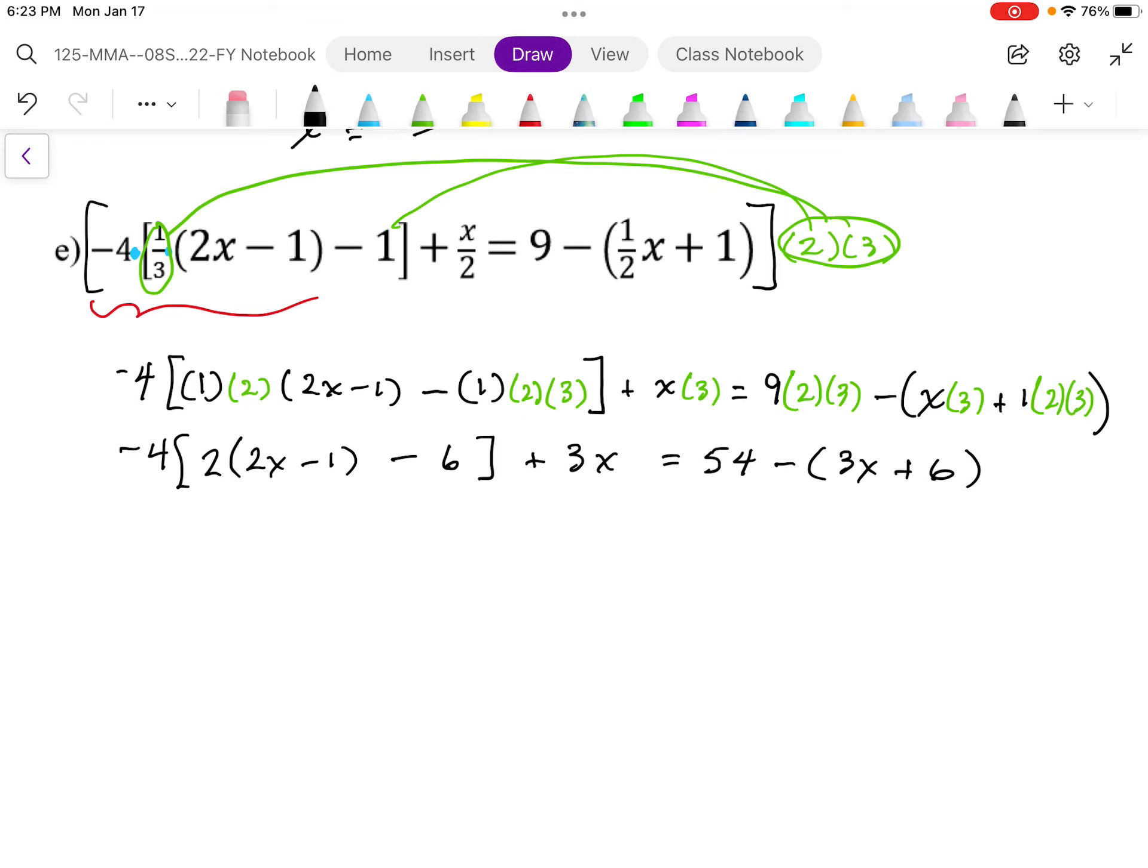So I'm going to get rid of brackets. I've now got rid of all the fractions. That was my first step. Now I'm going to get rid of brackets. So before I did the brackets first, then fractions, that's what I would suggest you do. But we can now get rid of brackets. So 4x minus 2 minus 6 plus 3x equals 54. Get rid of the brackets here, so I'm going to distribute that negative onto both terms. Minus 3x minus 6.